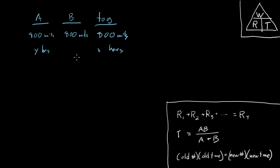So we're missing the time for machine B to do that same job of producing 800 nails. I'll call the time for B little b.